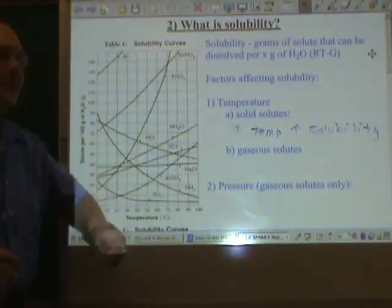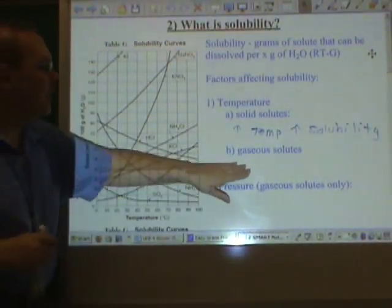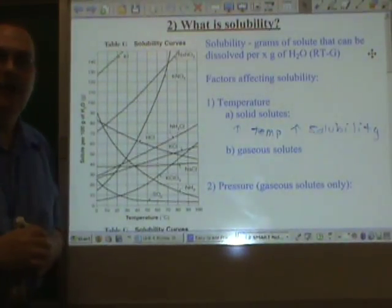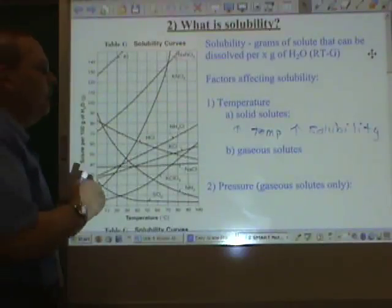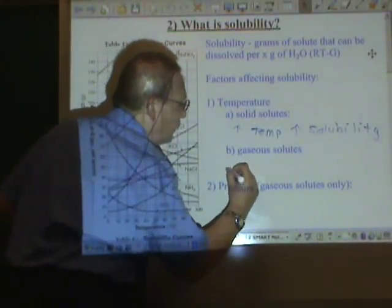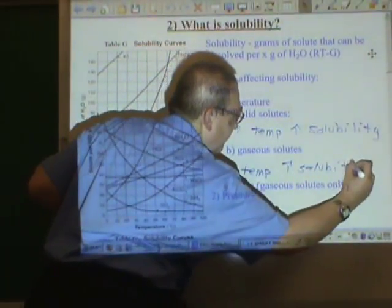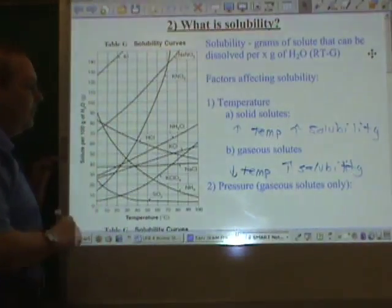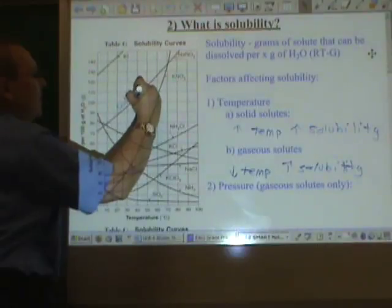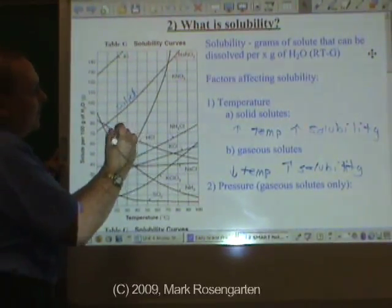But, for gaseous solutes, gases already have high entropy. When you dissolve them in water, they act like a liquid. You're bringing their entropy down. That's not favored. Therefore, this will only be favored at low temperatures. Lower the temperature, increase the solubility. And so you can see what we've got here. The curves that go up are solid solutes. And the curves that go down are gas solutes.